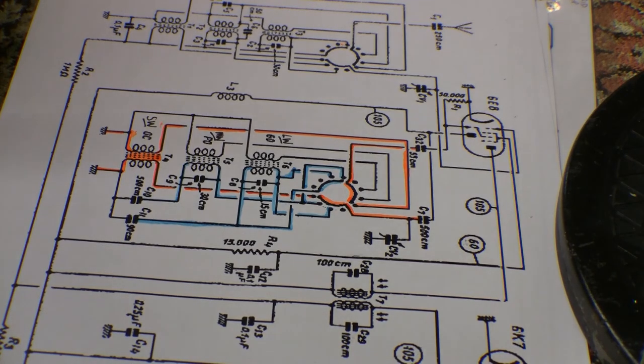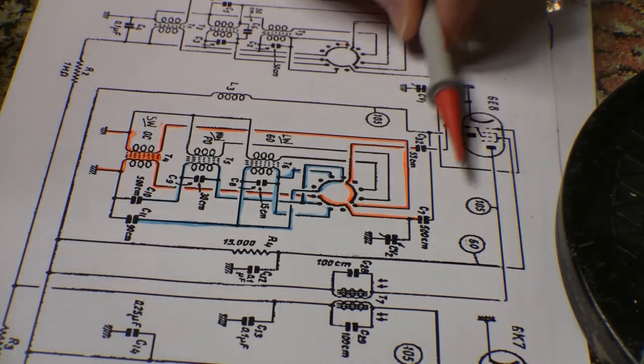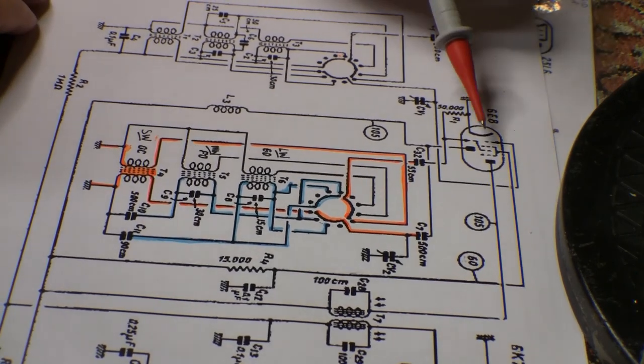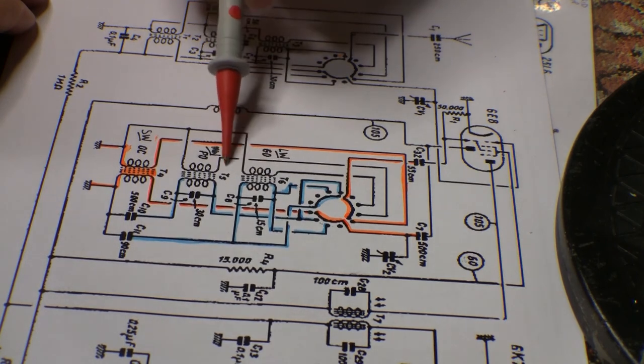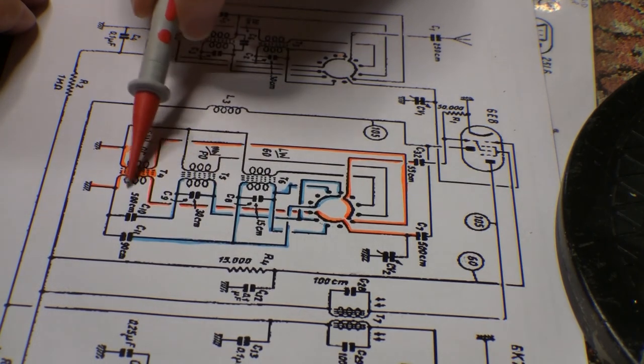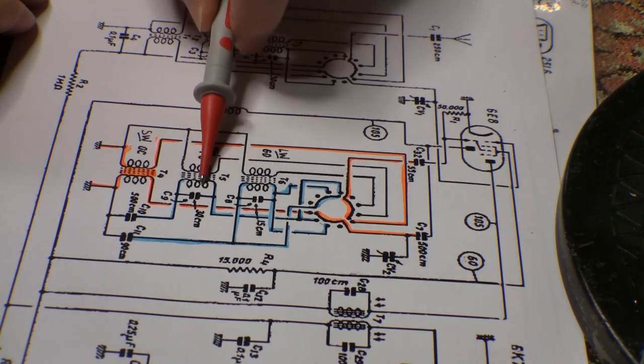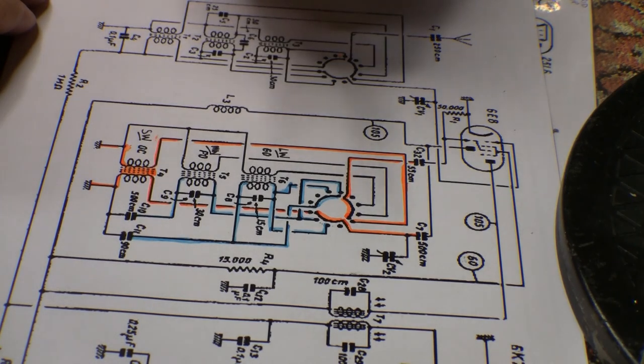So this is the local oscillator and this is the triode hexode, usual stuff here. This is the coil for longwave, this is one for medium wave, and this is the one for shortwave. Right now it oscillates on longwave and medium wave, zilch on shortwave.